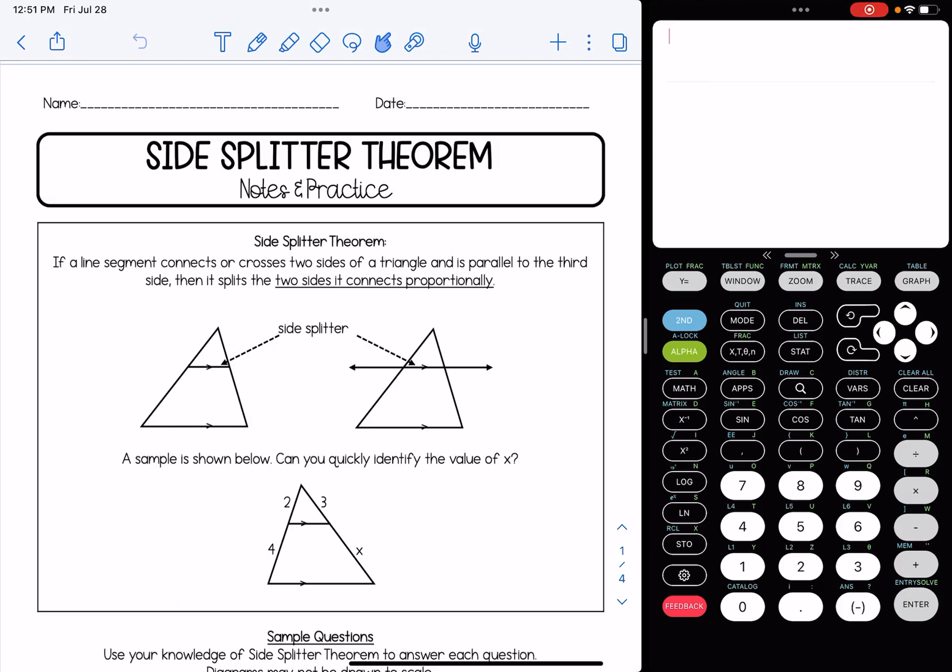Hey everyone, in this video we're going to be talking about something called the side splitter theorem. This is basically a theorem that says if a line segment connects or crosses two sides of a triangle and it's parallel to the third side, then it splits the two sides it connects proportionally.